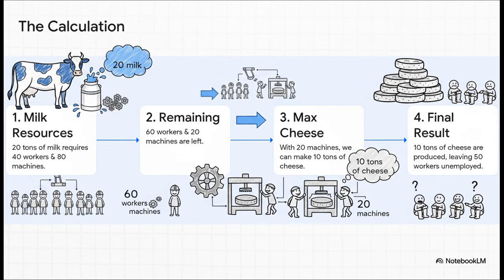Let's just walk through it step by step. First, making 20 tons of milk uses up 40 workers and 80 machines. So that leaves us with 60 workers and just 20 machines free. Now, what's the bottleneck for making cheese? It's clearly the machines. With only 20 machines left, we can produce a maximum of 10 tons of cheese.